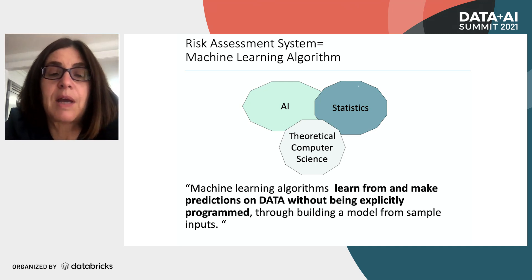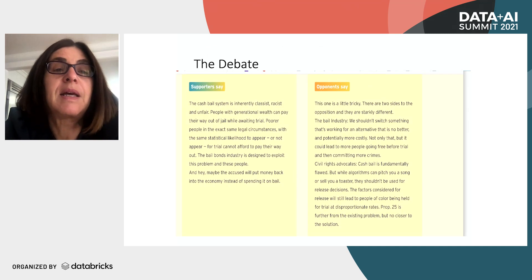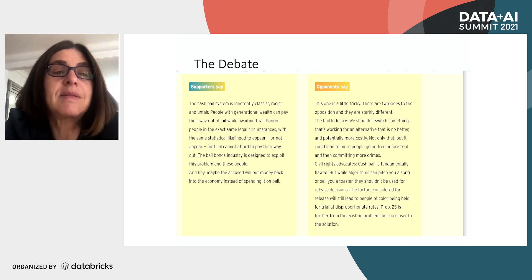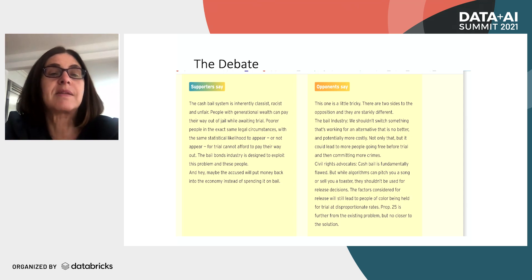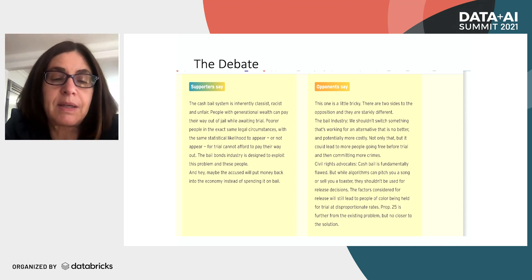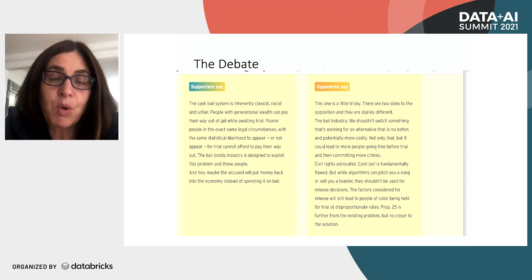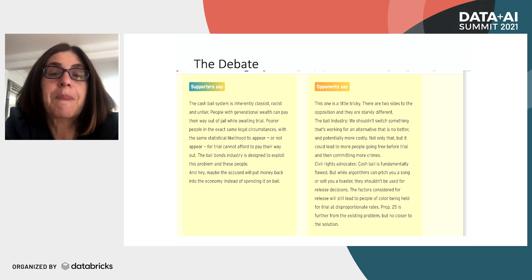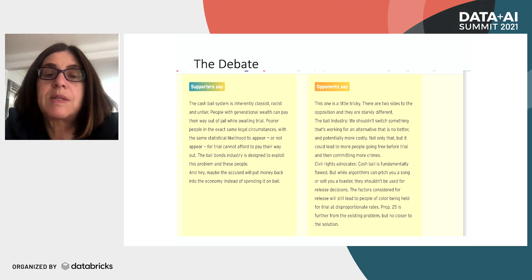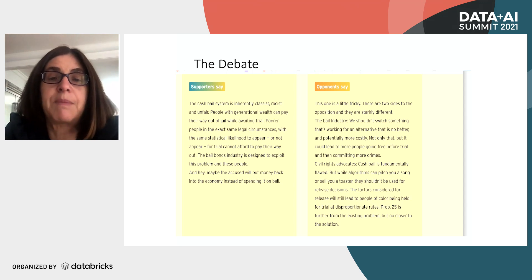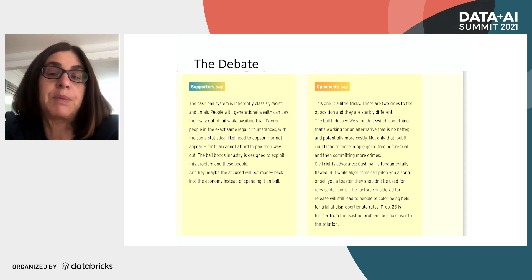What was the debate in the case of the California bill? The supporters said something that I think nobody can disagree with: the cash bail system is inherently racist, classist, and unfair. People who have money can commit horrific crimes and go out on bail; people who don't have money can commit small crimes and stay in jail. Everybody seems to agree, except maybe for the bond industry.